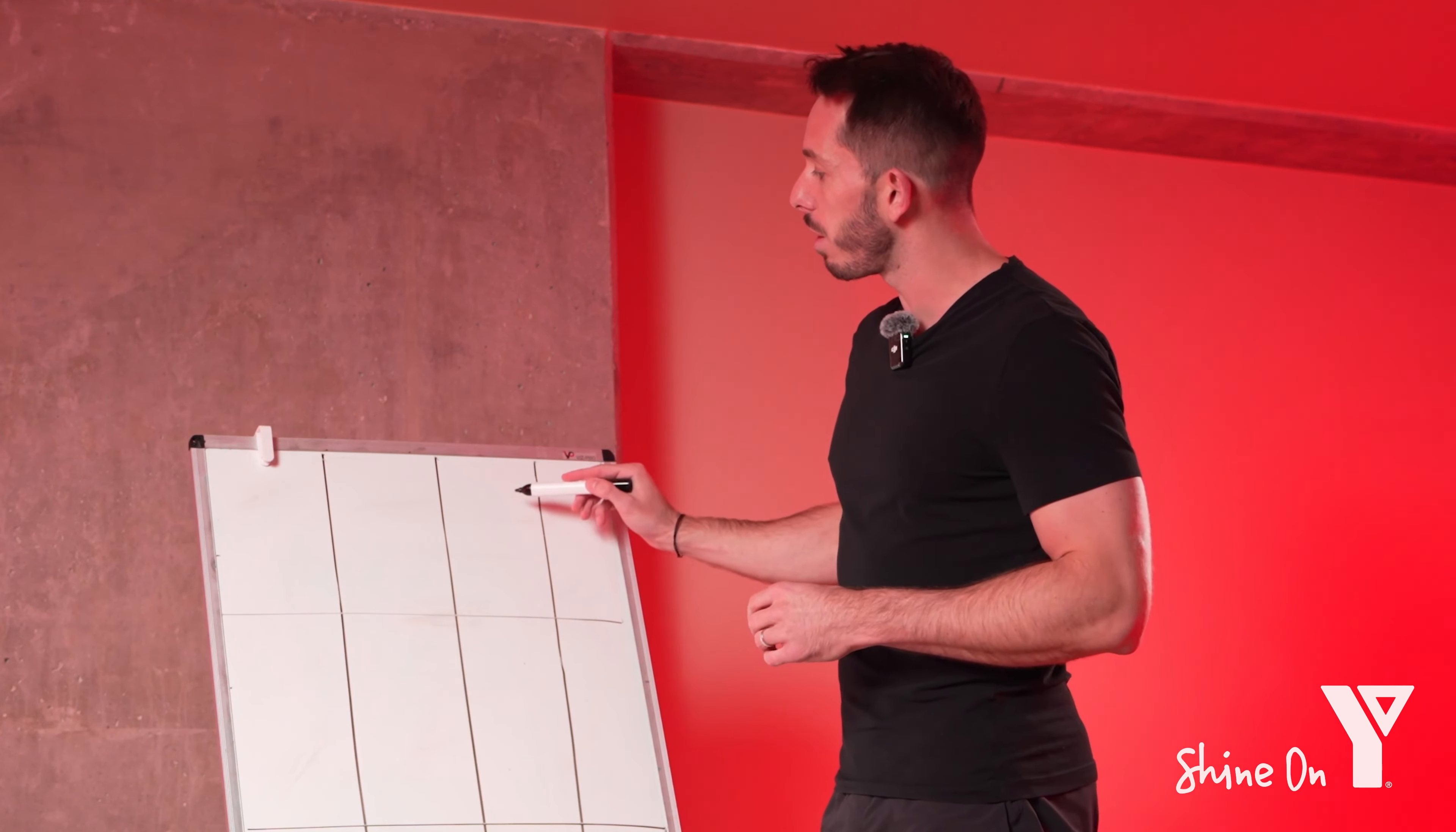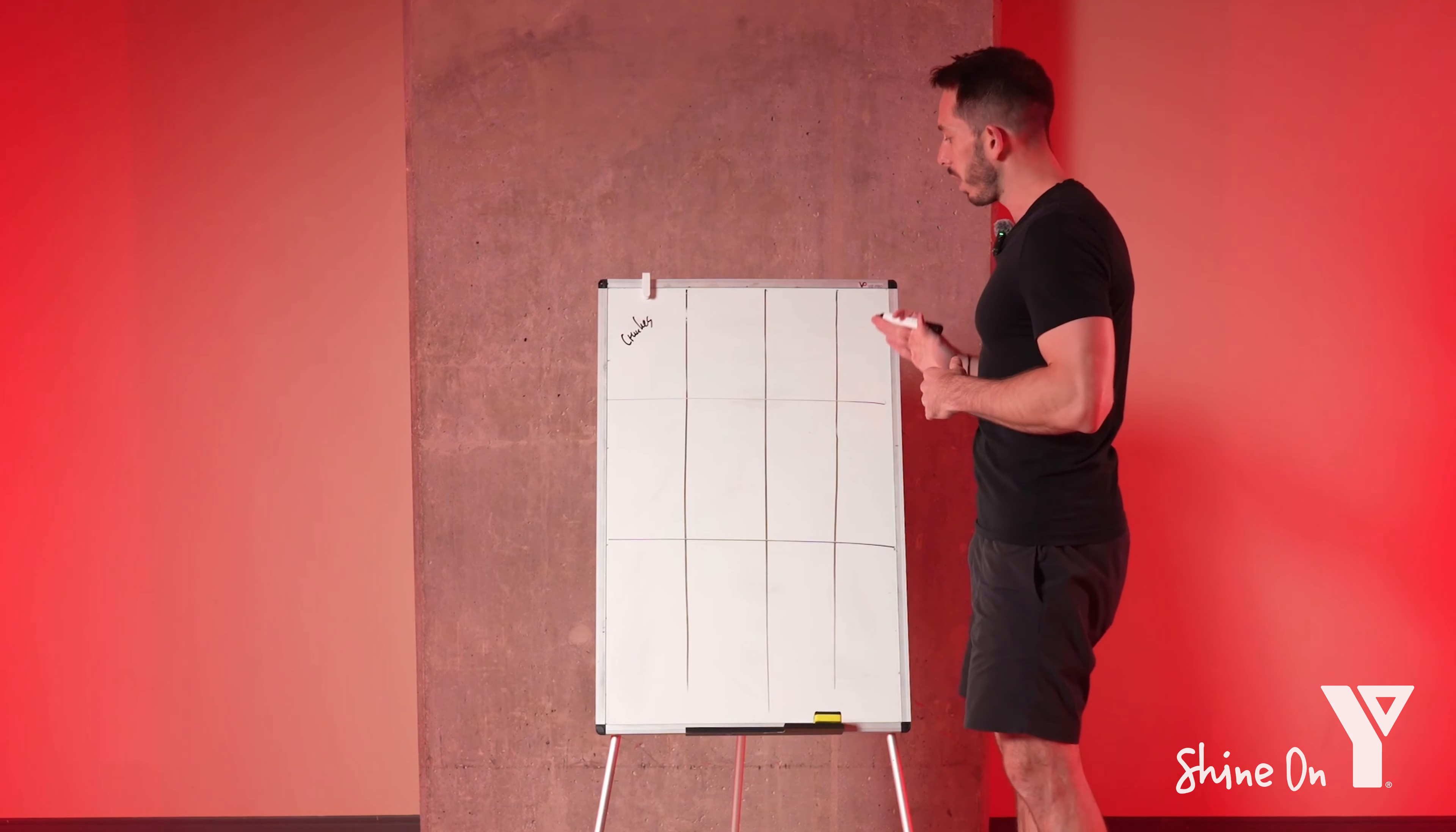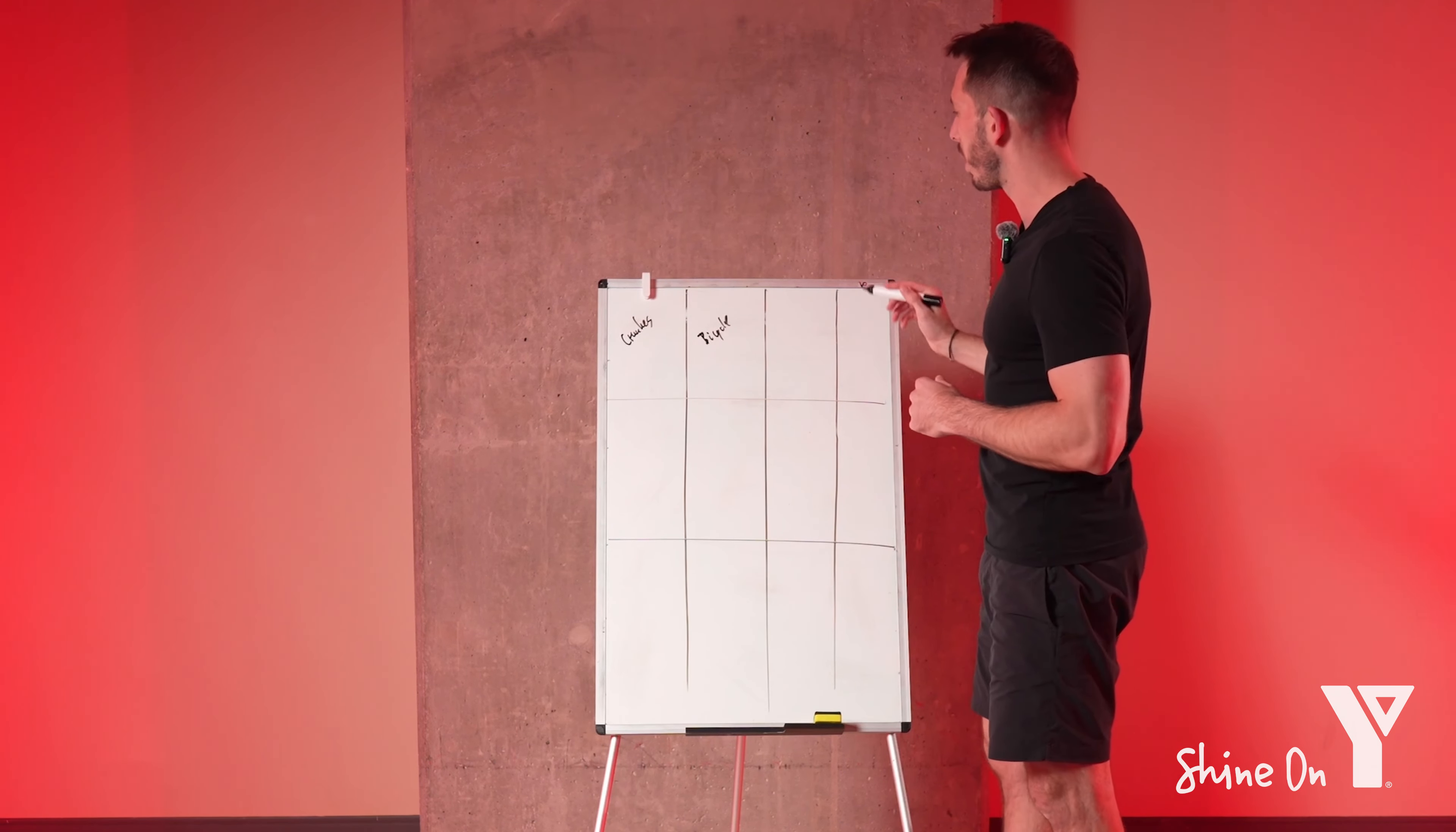So the first and the third exercise will always be strength based. So for the first one, let's just go with crunches to keep it simple and slow. Then for the second and the fourth one, you want to get your heart rate up. So in this case I can go for bicycle, meaning the ab exercises, not that you have to jump on a bicycle.